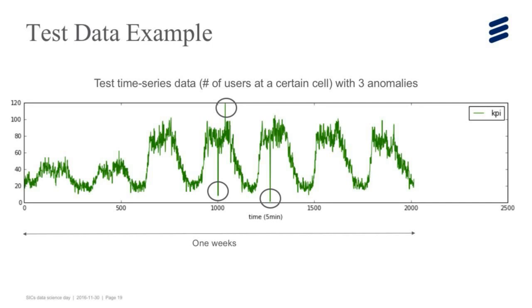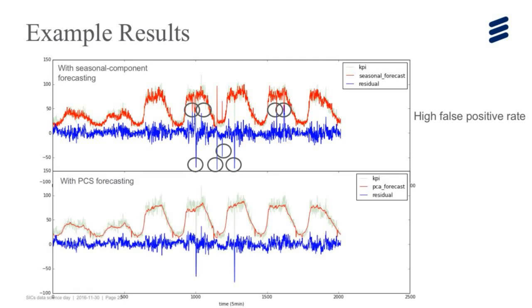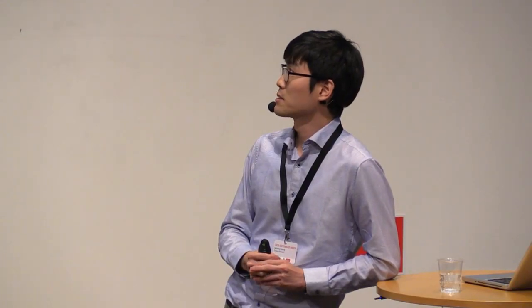Let me show you one test example. This is test time series data, number of users at a certain cell. By running offline analysis with certain epsilon, we obtain these three labeled anomalies. We first try the seasonal decomposition technique. Due to overfitting and large white noise, the residual data is again overfitted. Using the same threshold, we obtain eight anomalies rather than three. So this is high false positive rate. On the other hand, in our PCS forecasting model, we forecast without noise and overfitting. After setting threshold, we obtain three anomalies, which is correct. Our forecasting gives low false positive rate.